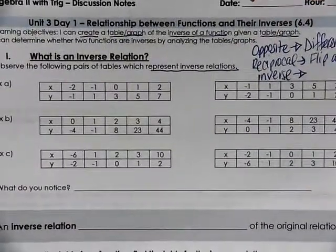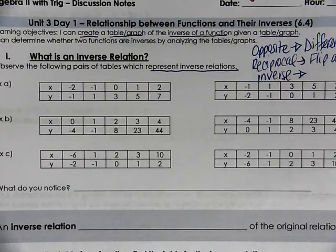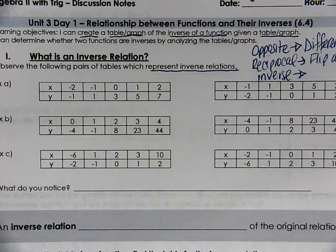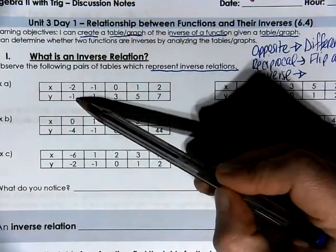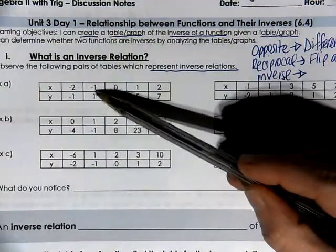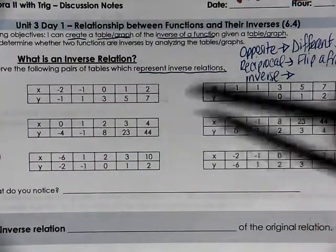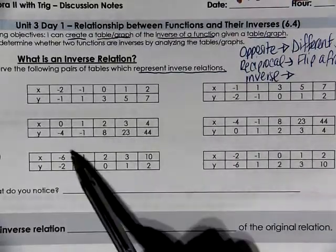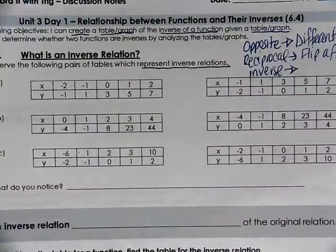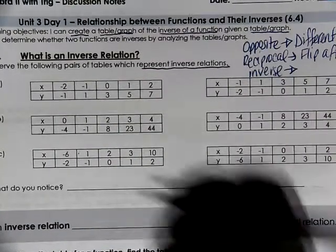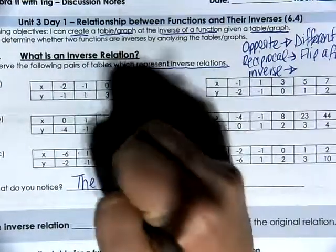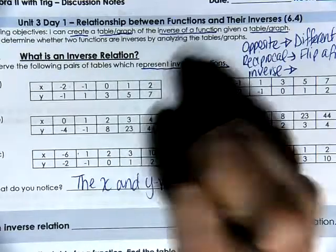I want you to observe these tables and tell me what you notice. Did you notice that the x and y values are switched? Looking at the first table: negative 2, negative 1 becomes negative 1, negative 2; negative 1, 1 becomes 1, negative 1; 0, 3 becomes 3, 0; 1, 5 becomes 5, 1; and 2, 7 becomes 7, 2. The same exact pattern takes place with the other tables. You should notice that the x and y values are switched.